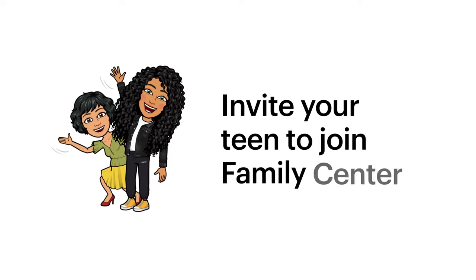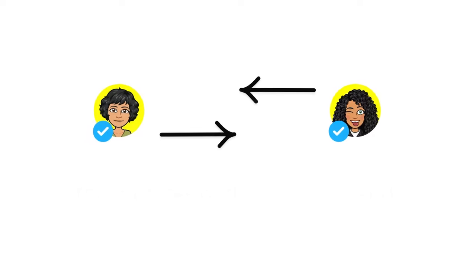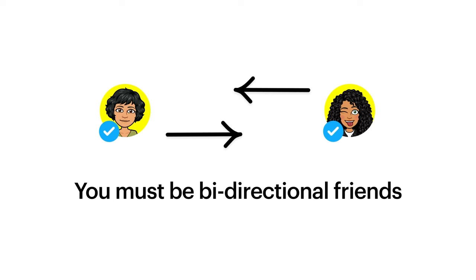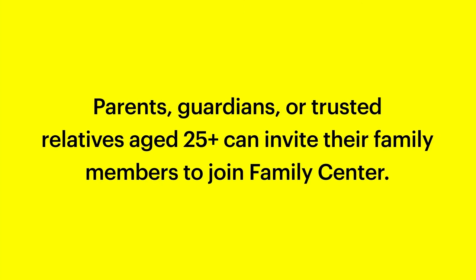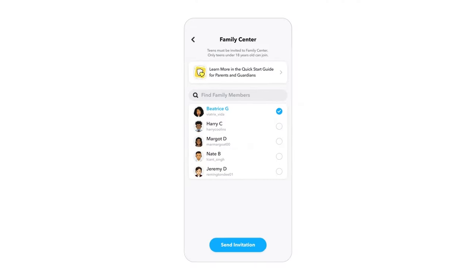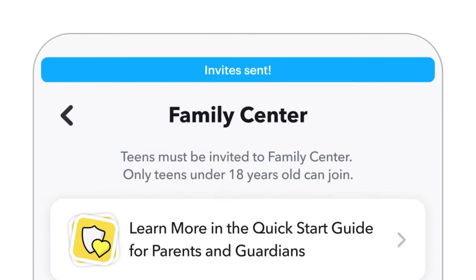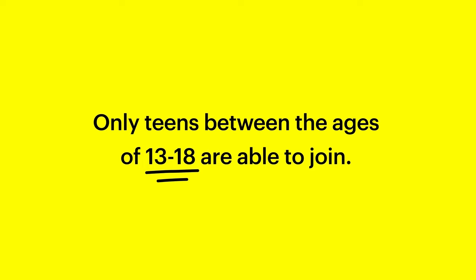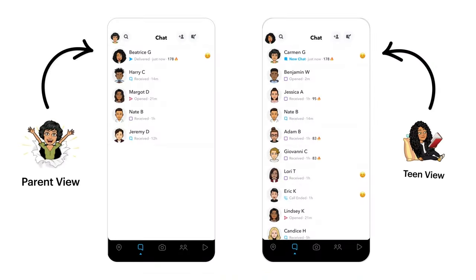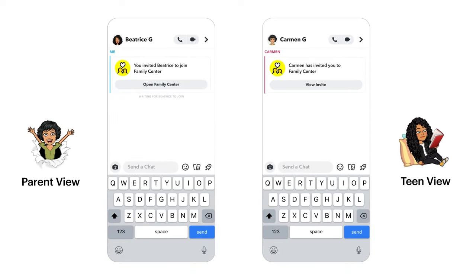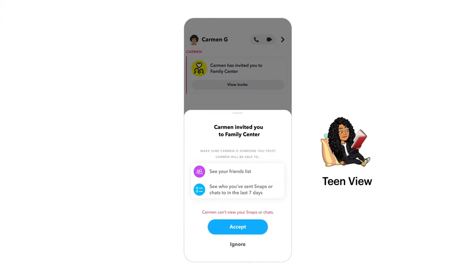Now that you've set up your account, you'll need to invite your teen to join Family Center. Remember, you must be friends with your teen on Snapchat to send an invitation. Parents, guardians, or trusted relatives aged 25 or older can invite their family members to join Family Center by selecting profiles from a pre-populated list or by searching for specific Snapchatters. Note that only teens between the ages of 13 and 18 are able to join. It's against our Terms of Service for people under the age of 13 to create a Snapchat account. Invitations are sent through a direct chat between the parent and their teen, and just like a regular conversation on Snapchat, the message will delete either immediately or 24 hours after your teen has viewed it, depending on their settings. So be sure to remind them in person to accept the invite.